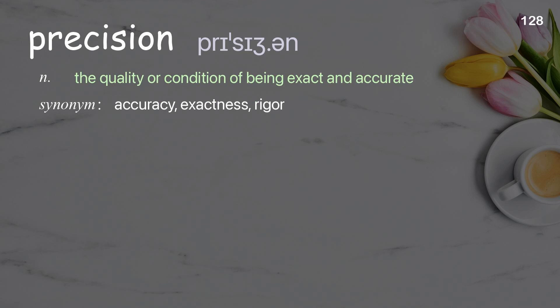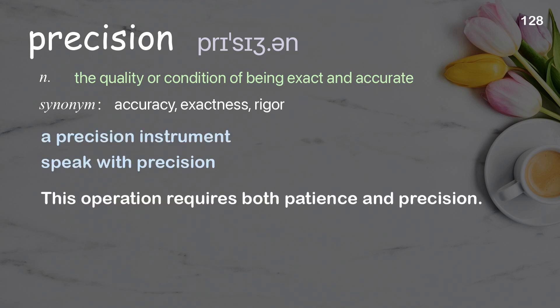Precision: the quality or condition of being exact and accurate. Examples: a precision instrument, speak with precision. This operation requires both patience and precision.